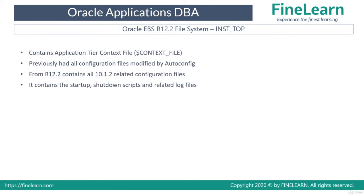So what does it contain basically? It contains one of the most important files of the application tier, that is the context file. The context file, as we have discussed several times before, is one of the most important configuration files — it is a collection of the configuration of the EBS application tier. Both database and application tier have one context file each. On the application tier, the context file is located in the instance top. You can access this context file directly by using the environment variable $CONTEXT_FILE. Previously this was there in APPL_TOP/admin in older versions, but from release 12 it has been moved to INST top.